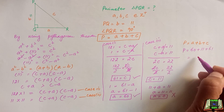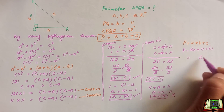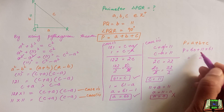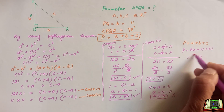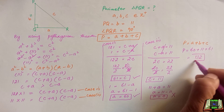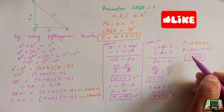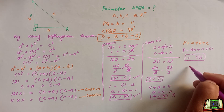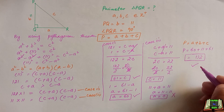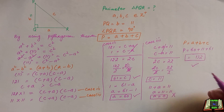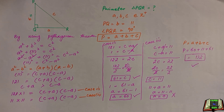Perimeter equals A which is 60, plus B which is already given as 11, plus C which is 61. After adding we get 132. So the perimeter is basically the summation of all three sides, which is equal to 132. I hope you liked this solution. If you have any questions, write in the comment box. Thanks for watching.